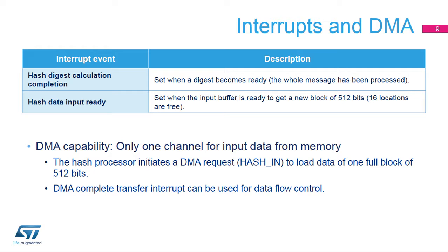In direct memory access, or DMA mode, requests are generated internally for incoming data. The DMA channel must be configured in memory-to-peripheral mode with a data size equal to 512 bits.